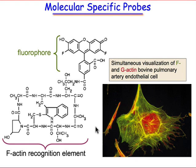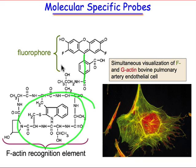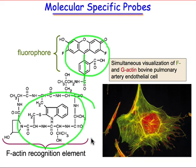Here's the molecular structure of the F-actin probe. The recognition element for F-actin is covalently attached to the fluorophore of the molecule. So wherever the F-actin element is, so is that fluorophore. By making the fluorophore specific to a particular color, we can spatially image where the F-actin molecules are.